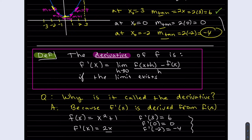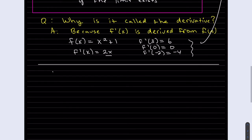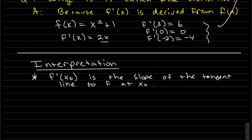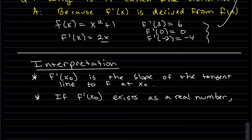Now we have nicer, more compact notation. I want to write out all the different interpretations we learned about the slope of the tangent line and the secant line. The derivative at a point — if the derivative at a point exists as a real number (not infinity), then f is differentiable at that point.